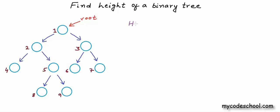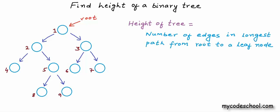Now height of a tree is defined as number of edges in longest path from root to a leaf node. In this example tree, 4, 6, 7, 8 and 9 are leaf nodes. A leaf node is a node with 0 children.